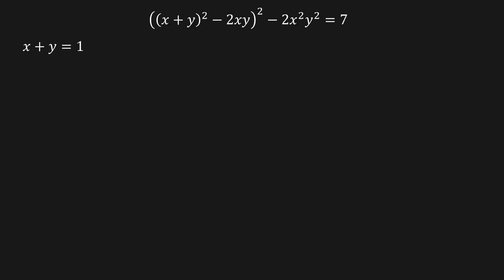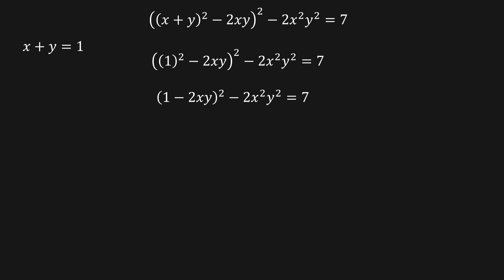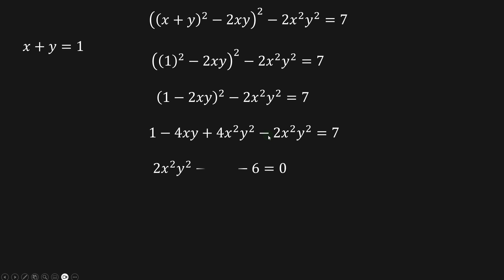From this, we know that x plus y is equal to 1. So let's replace that here, and after combining terms we get this. Then this minus this gives us something minus 4xy squared. We bring the 7 to the left side, getting 1 minus 7, which is negative 6. Dividing both sides by 2, we have x-squared y-squared minus 2xy equals 3.